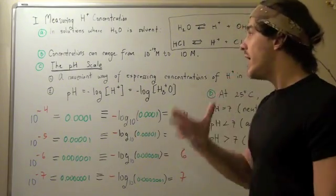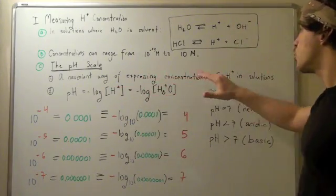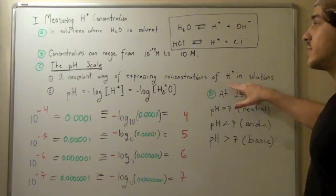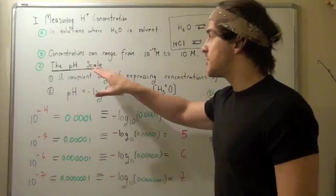So, scientists came up with a way, or a convenient way, of expressing the concentration of our hydride ions in solution. And this convenient way is called the pH scale.